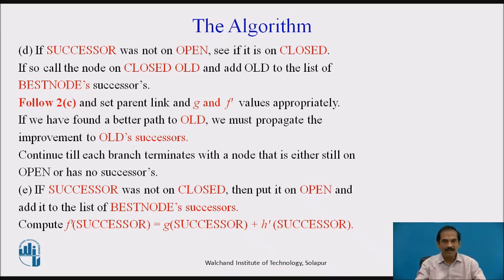Thus the heuristic functions G and F' are calculated. If we have found a better path to 'old', we must propagate the improvement to old's successors. Continue this until each branch terminates with a node that is either still on open or has no successors. If the successor was not on open or closed, put it on open and add it to the list of best node successors. Compute F'(successor) equal to G(successor) plus H'(successor).